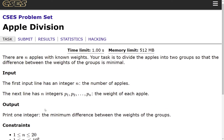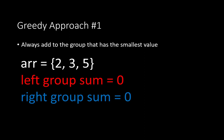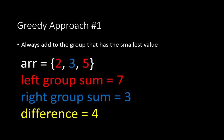Looking at this problem, we're going to try and approach it with some different strategies. The first approach is a greedy one: add every time to the group that has the smallest weight value. So the array is 2, 3, and 5. By default, if the weights of the groups are the same, we add to the left group. So the first apple with weight 2 goes left. Then the second apple goes to the right group because 2 is greater than 0. Then 5 goes to the left group because 2 is smaller than 3. The difference here is equal to 4.